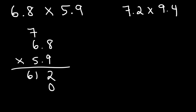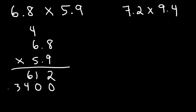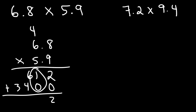Now let's write a 0 for the next row. So we have 5 times 8, which is 40, so let's carry over the 4. And then 5 times 6 is 30, plus 4, so that's going to be 34. Now let's add column by column. Here we have 2. Then 1 plus 0 is 1. Then we have 6 plus 4, which is 10. Write the 0, carry the 1. 3 plus 1 is 4. We have one digit to the right of the decimal point in each number, so a total of 2 digits. Therefore, the answer is going to be 40.12.